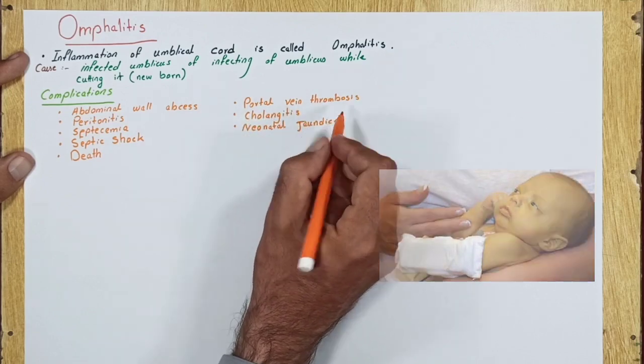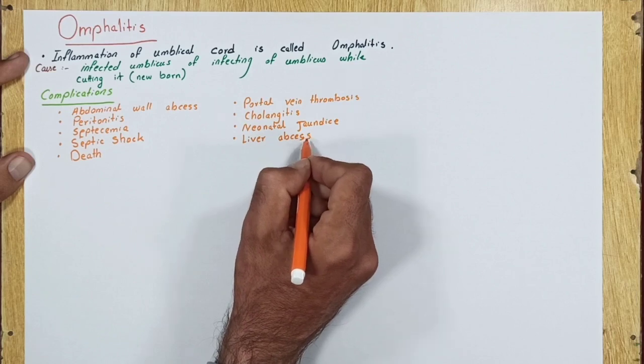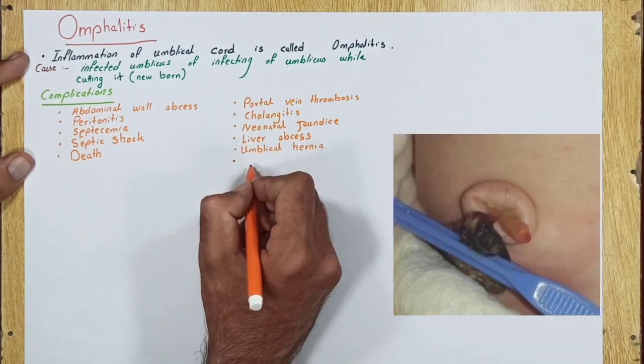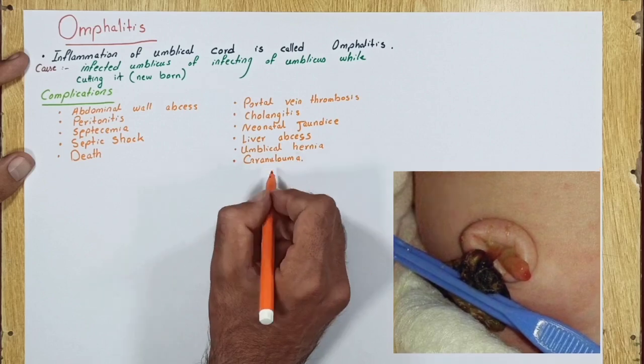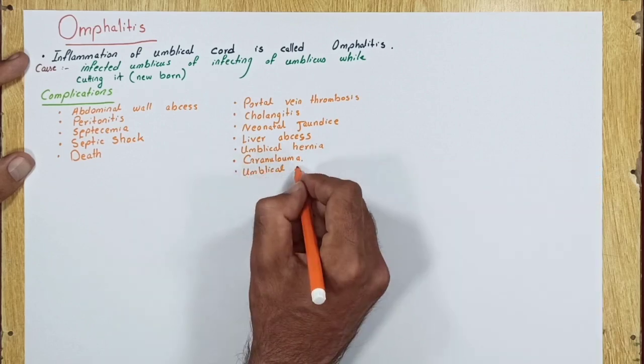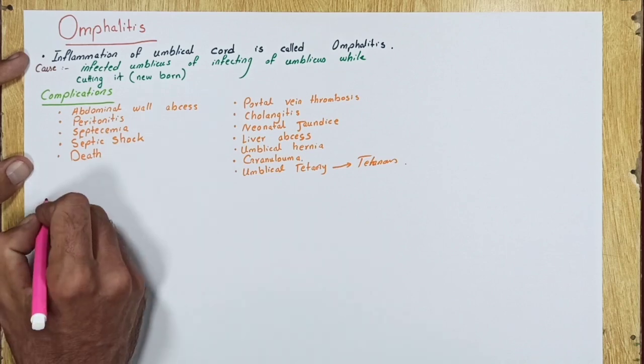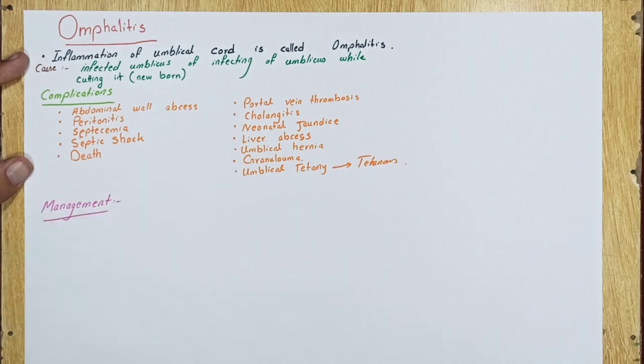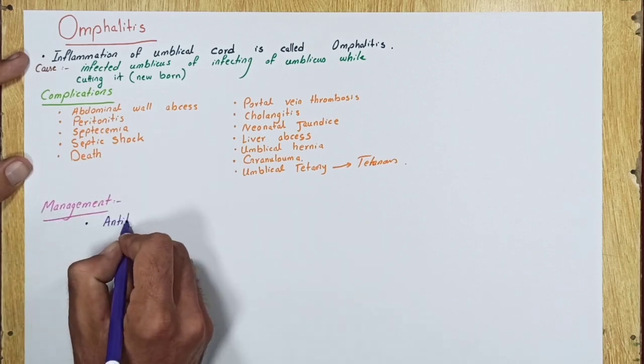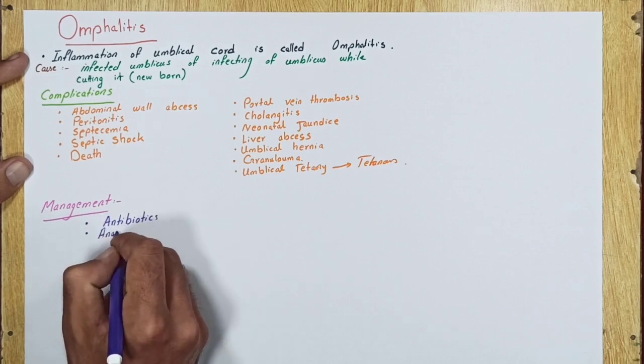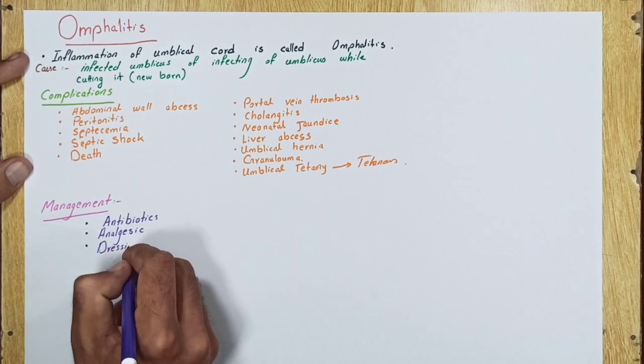Additional complications are neonatal jaundice, liver abscess, umbilical hernia, granuloma, and umbilical tetanus due to tetanus bacteria. Management of omphalitis includes broad-spectrum antibiotics, analgesics for pain, and dressings.